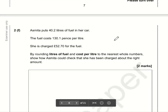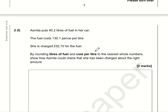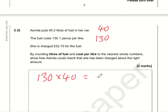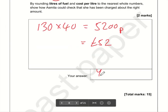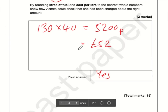For part f, we round the litres of fuel and the cost per litre to the nearest whole number. 40.2 becomes 40, and 130.1 becomes 130. So the calculation is 130p per litre times 40 litres, which is 5,200 pence — that's £52. She was charged £52.70, and since £52 is very close to £52.70, yes she has been charged the right amount.